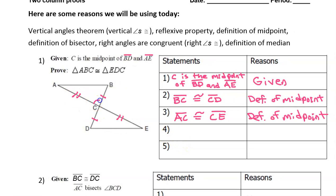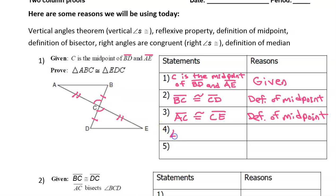Yes, the vertical angles. We have to use the three-letter name. A common mistake I will see: some students will write angle C is congruent to angle C. This is not acceptable because these two angles are not the same angle. So you have to use the three-letter name. For example, we can say angle ACB is congruent to angle ECD. When you are saying that vertical angles are congruent, the reason is simply vertical angles are congruent.